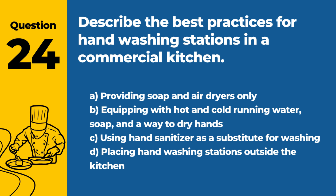Question 24: Describe the best practices for hand washing stations in a commercial kitchen. a. Providing soap and air dryers only. b. Equipping with hot and cold running water, soap, and a way to dry hands. c. Using hand sanitizer as a substitute for washing. d. Placing hand washing stations outside the kitchen. Answer: b. Best practices for hand washing stations in a commercial kitchen include providing hot and cold running water, soap, and a method for drying hands, such as paper towels or air dryers.